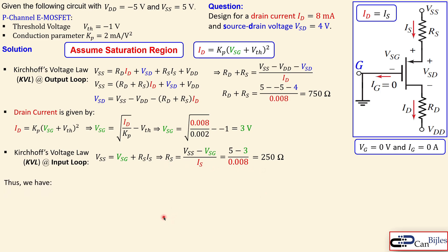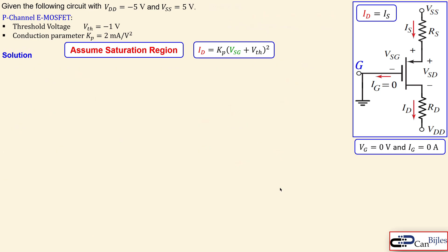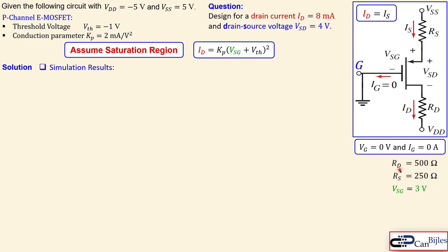We know RD + RS = 750 ohms, so RD = 750 − RS = 750 − 250 = 500 ohms. The individual resistor values are now fully determined: RS = 250 Ω, RD = 500 Ω, and VSG = 3 V.